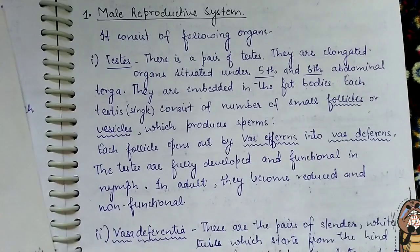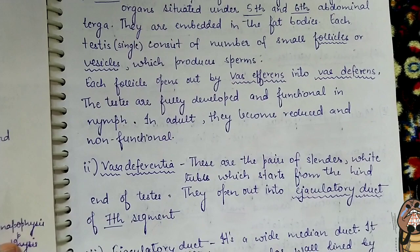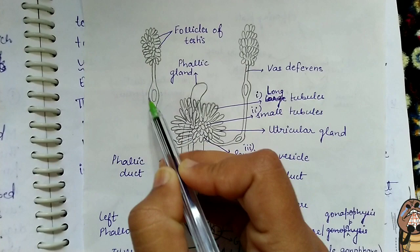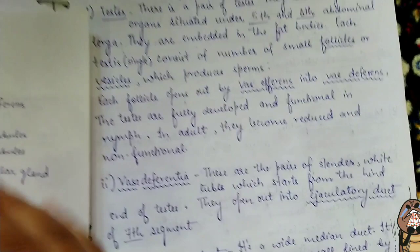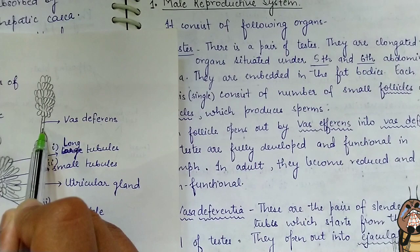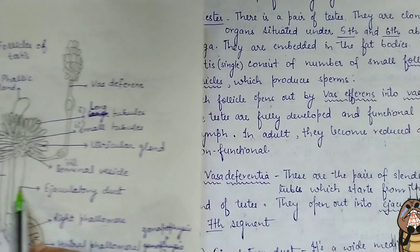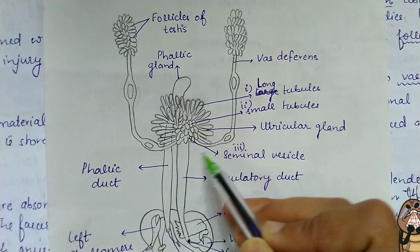Next is the vas deferens. The vas deferens is a wide cylindrical white tube which starts from the hind end of the testes and opens out into the ejaculatory duct in the 7th segment.